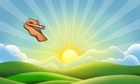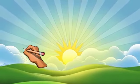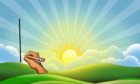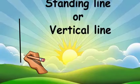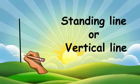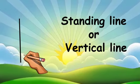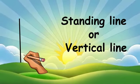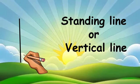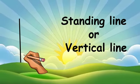Now let's draw a standing line. It starts from up and goes down. A standing line is also known as a vertical line.